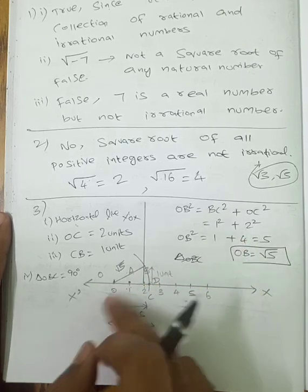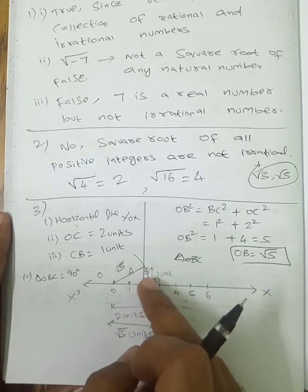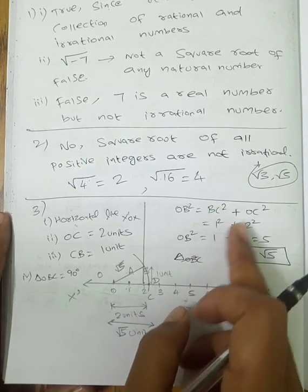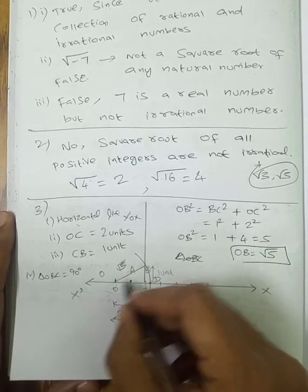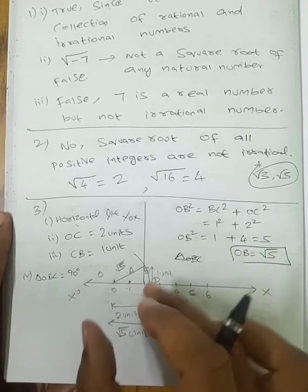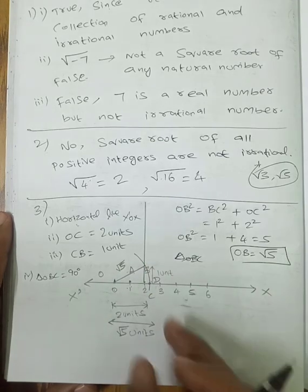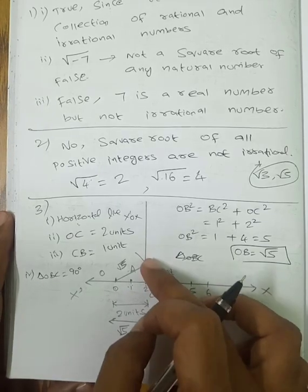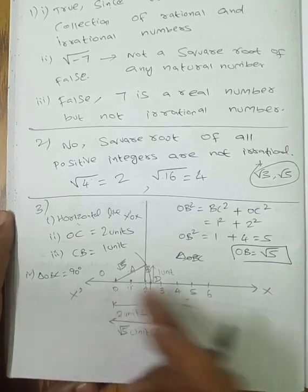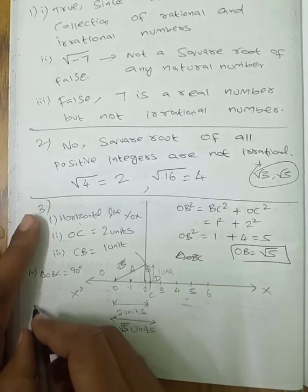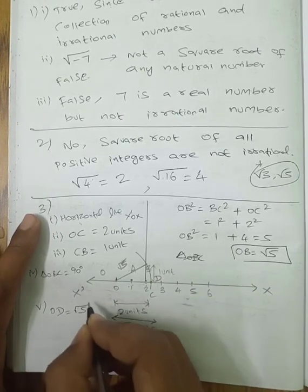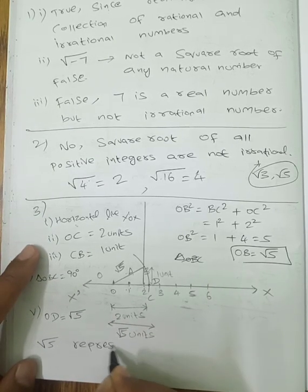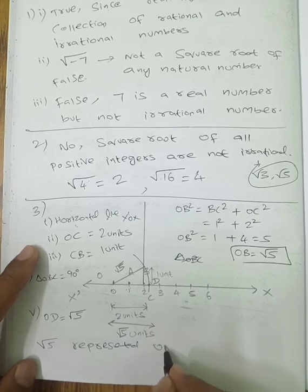OB value is √5. Using the compass, cut from B to mark point D on the number line, so OD = √5. This is how you plot and represent √5 on the number line.